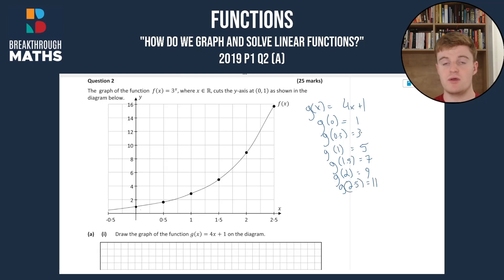So now we have our points, we can plot them on the graph. So (0,1) is going to be the same as f(x) there. (0.5, 3), that's going to be about there. (1, 5), about there.